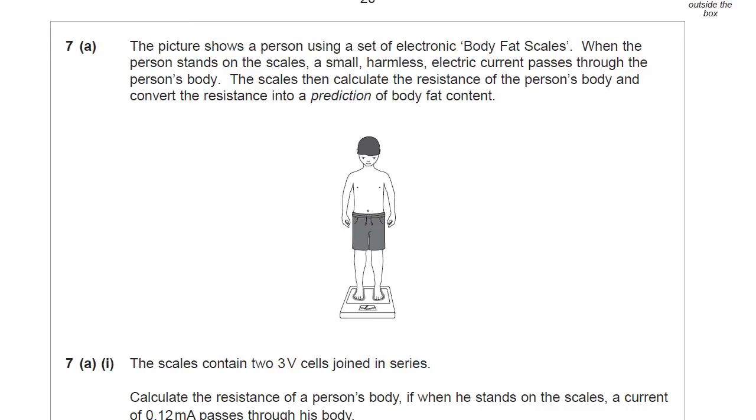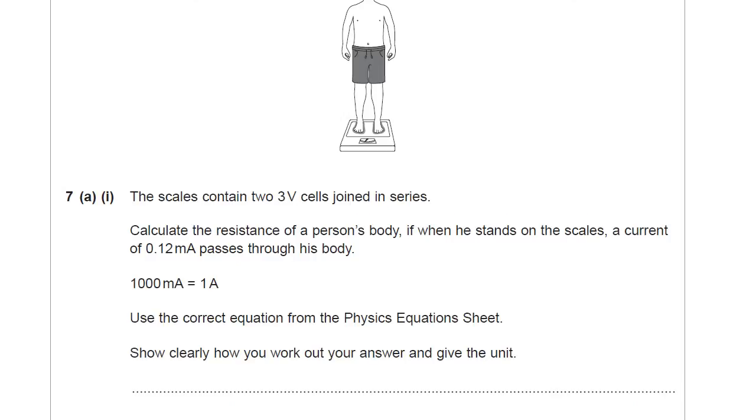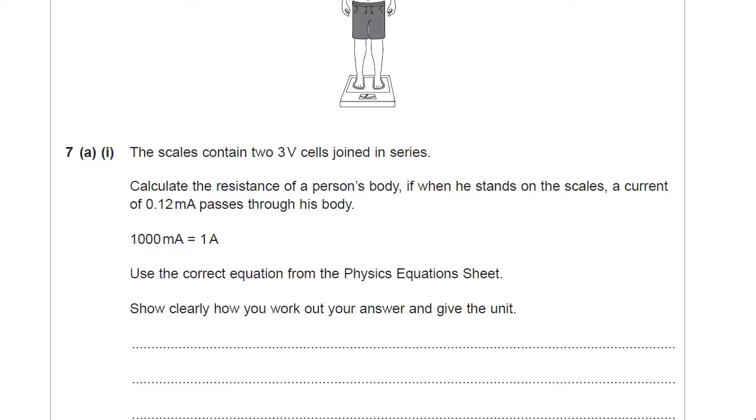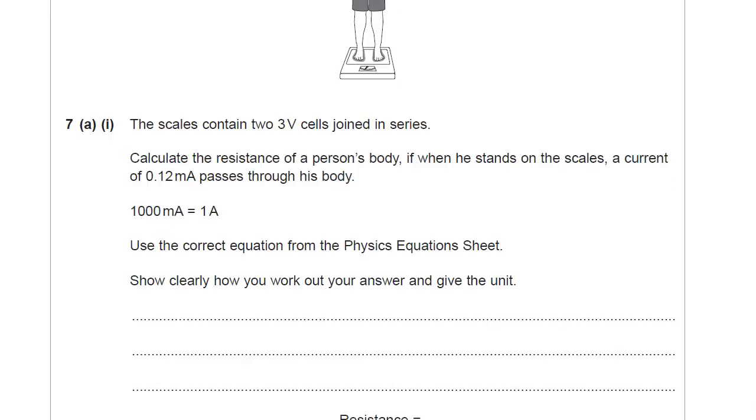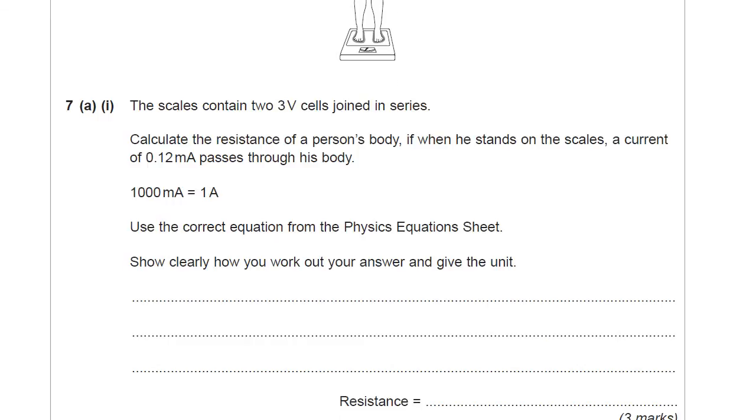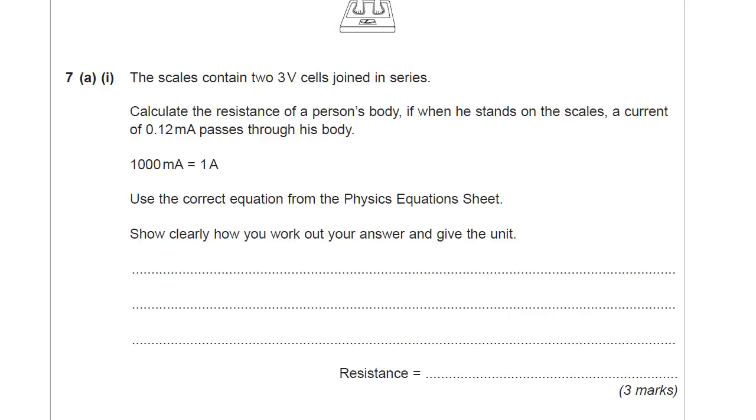That's the information. What do we have to do about it? The scales contain two 3-volt cells joined in series. Calculate the resistance of the person's body if, when he stands on the scales, a current of 0.12 milliamps passes through his body. Now it tells you 1,000 milliamps is 1 amp.